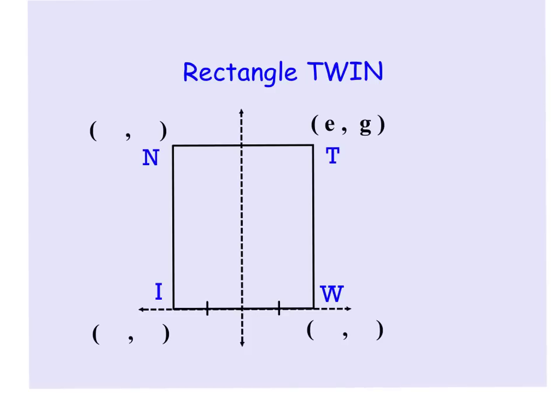For rectangle TWIN, we're given this point E,G. So we now know that the distance from here out to here is E, and the distance from here up to here has to be G.